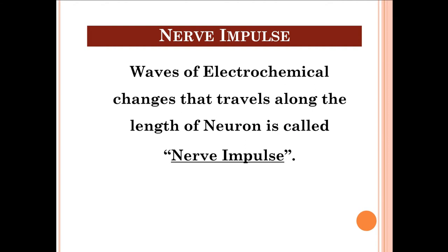By watching this video, I hope you have some idea about how the nerve impulses are generated and propagated and how the signals are transmitted, integrated, and finally responded to. The nerve impulse — waves of electrochemical changes that travel along the length of the neuron — carries different messages and signals from one cell to another cell.